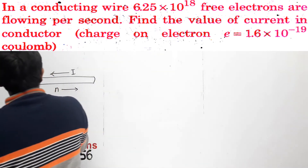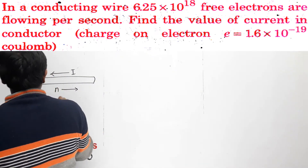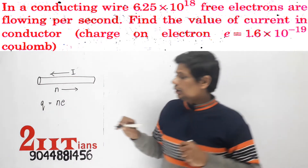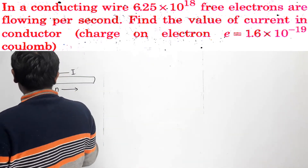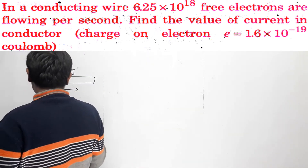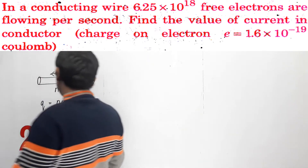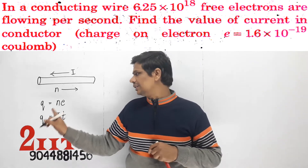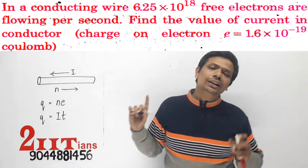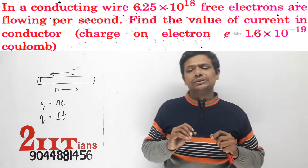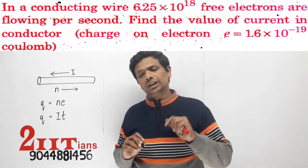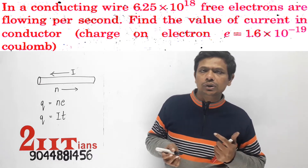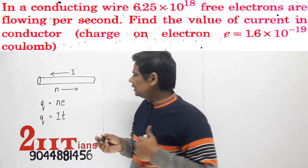We know that Q is equal to ne, and we also know that Q is equal to It. Here, t is the time, I is the current, Q is the charge, n is the number of electrons, and e is the charge on one electron. The charge on one electron is already given to us in this question.